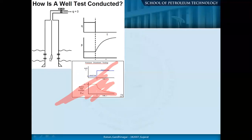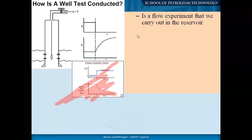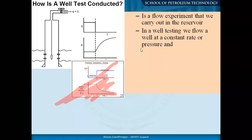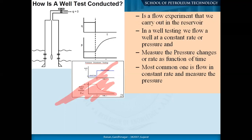A well test is conducted with the instrument positioned above the perforation in most cases. It is a flow experiment carried out in a reservoir. In well testing, we flow a well at a constant rate or pressure. You have two parameters: Q (flow rate) and P (pressure). Either you keep the flow rate constant or keep constant pressure, but the flow rate sometimes cannot be maintained — so different approaches are used.